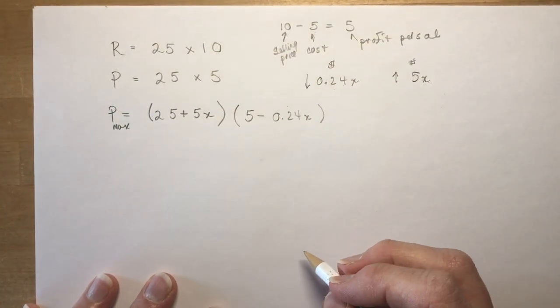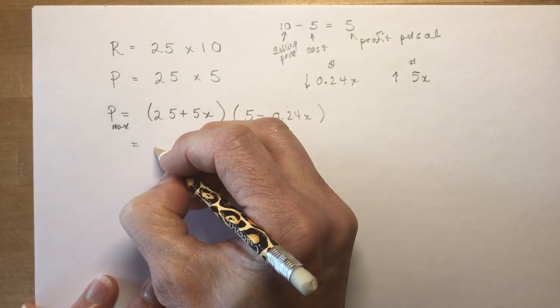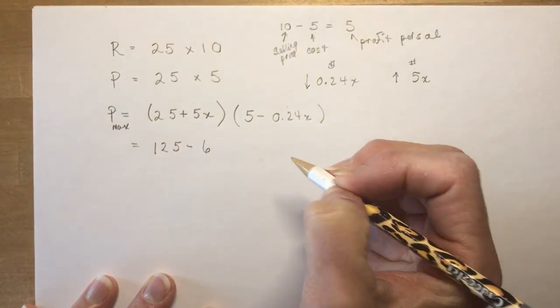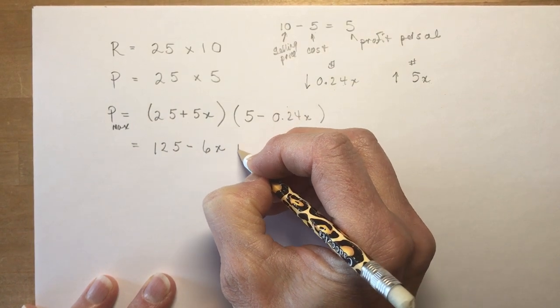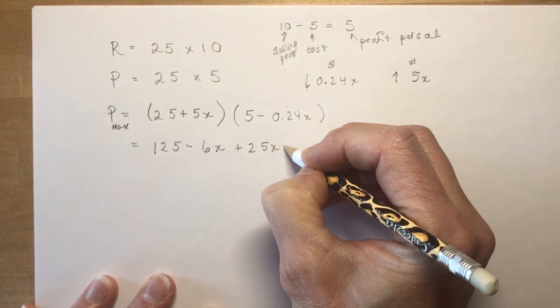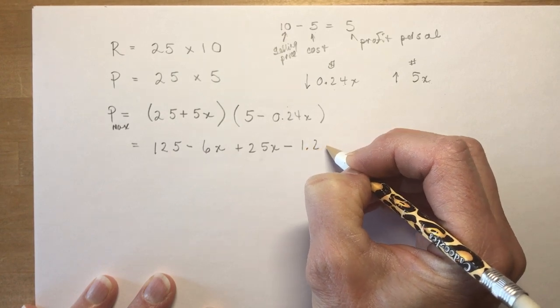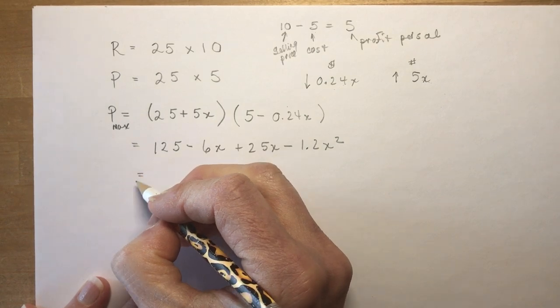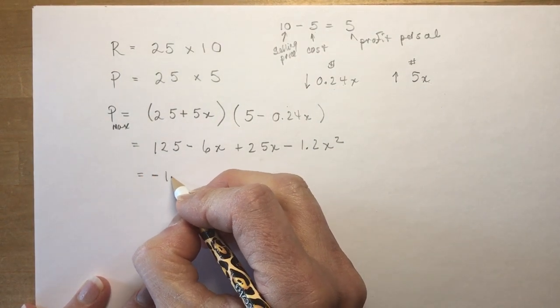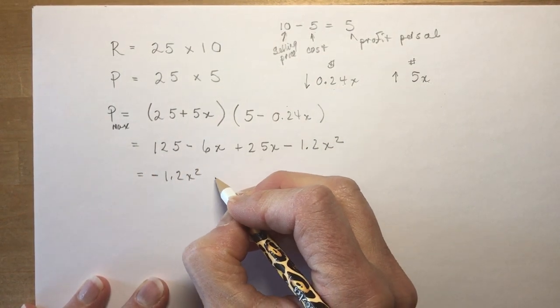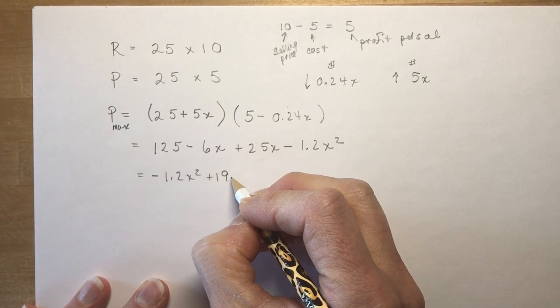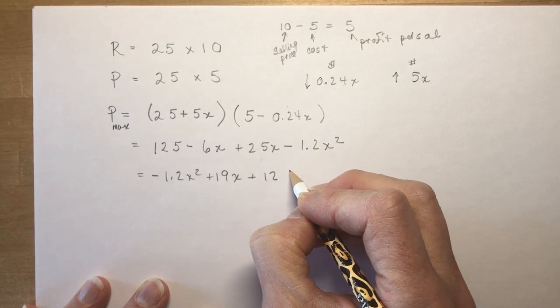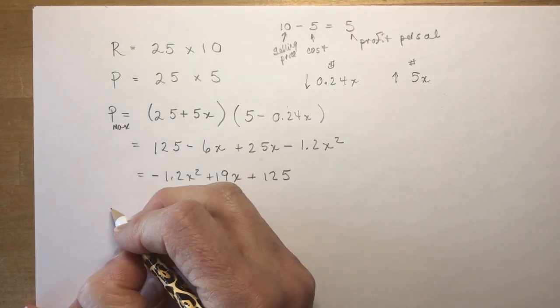Okay, so now you have to expand this before you take the derivative. So I get 125 - 6X + 25X - 1.2X². And it's a good idea to write this in descending order: -1.2X² + 19X + 125.